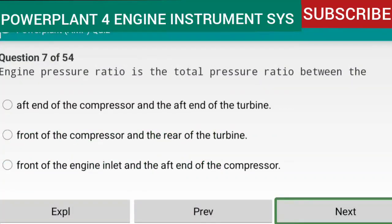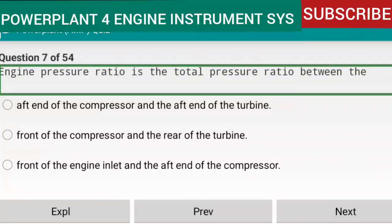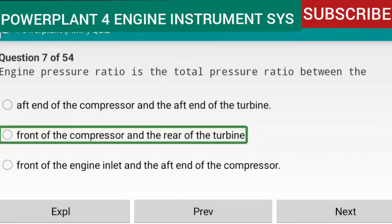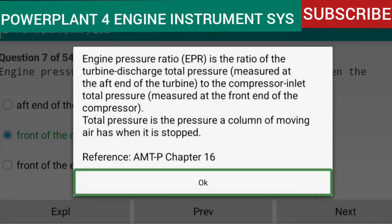Question 7 of 54: Engine pressure ratio (EPR) is the total pressure ratio between the front of the compressor and the rear of the turbine. EPR is the ratio of the turbine discharge total pressure, measured at the aft end of the turbine, to the compressor inlet total pressure, measured at the front end of the compressor. Total pressure is the pressure a column of moving air has when it is stopped. Reference: AMTP Chapter 16.